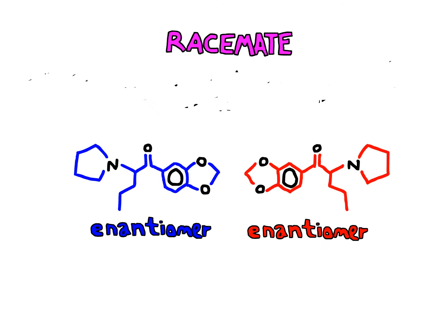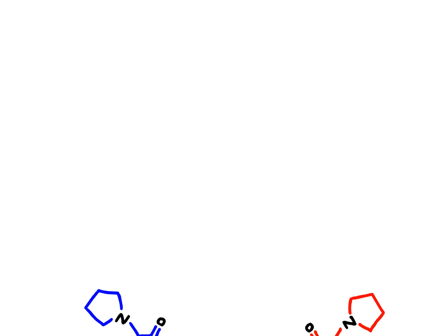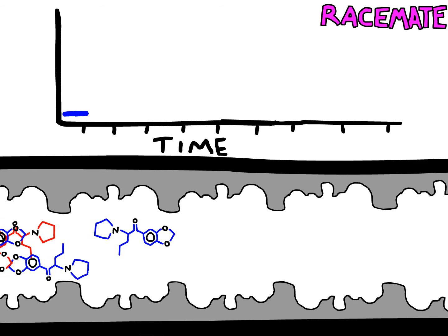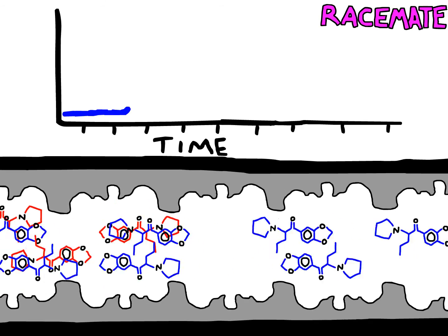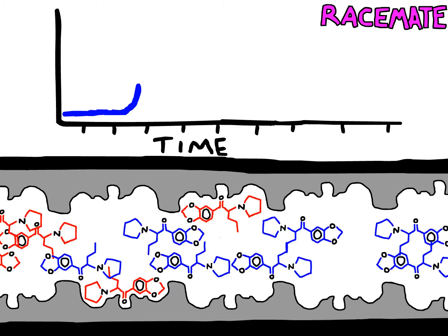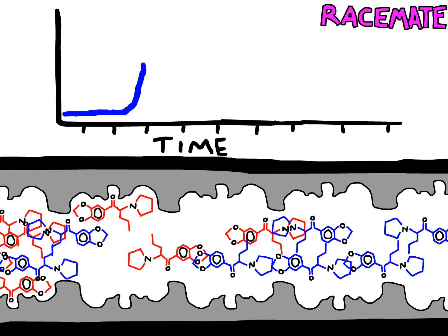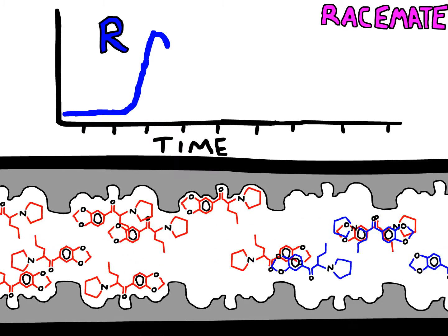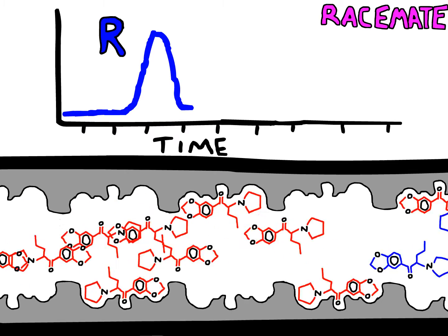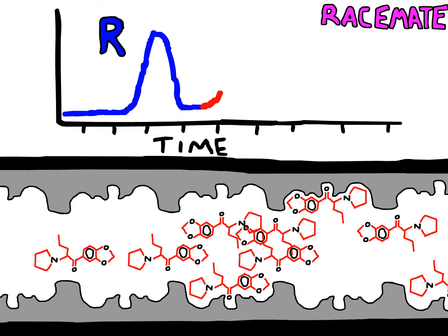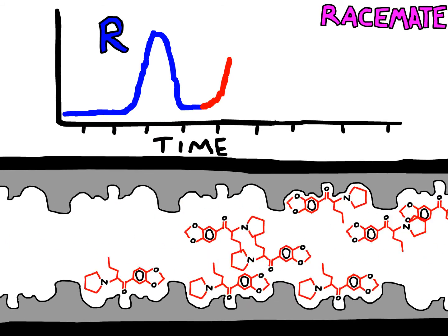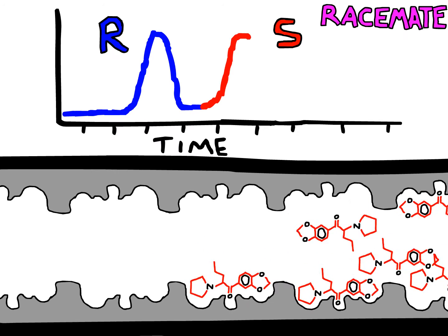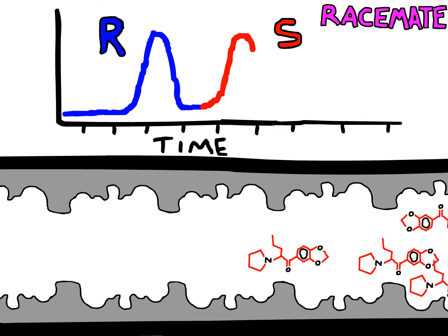Since mass spectrometry can't distinguish between the two enantiomers, one can use a chiral column to separate them prior to detection. The R-MDPV in blue has a limited interaction with the column and comes off first. The S-MDPV in red has a more substantial interaction with the column and comes off second.